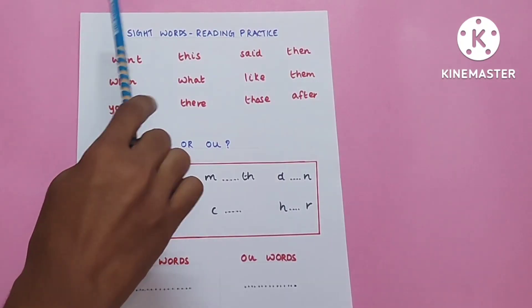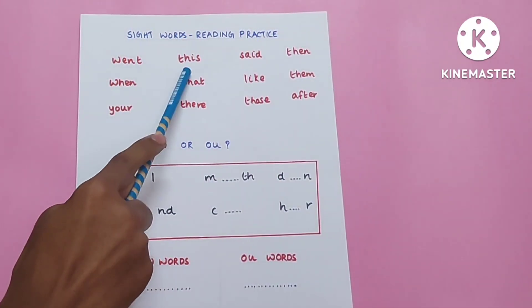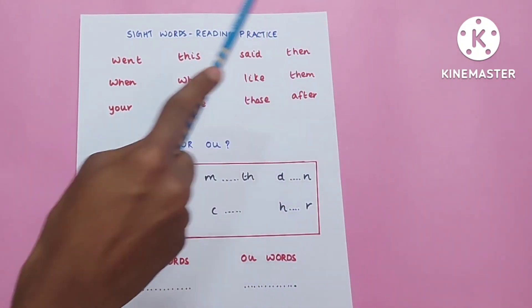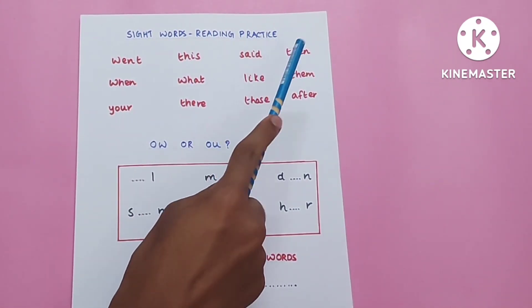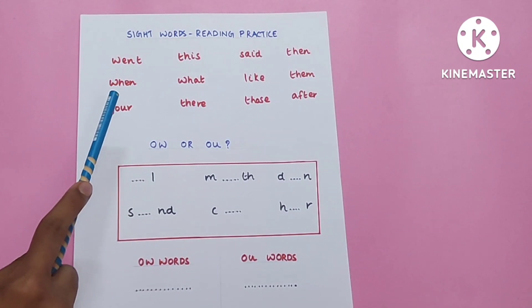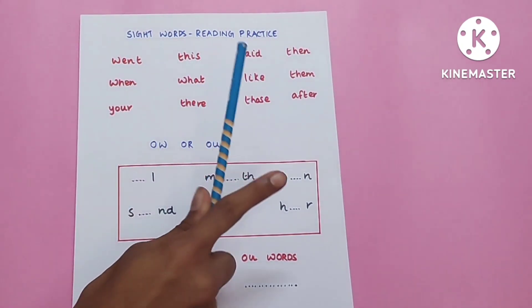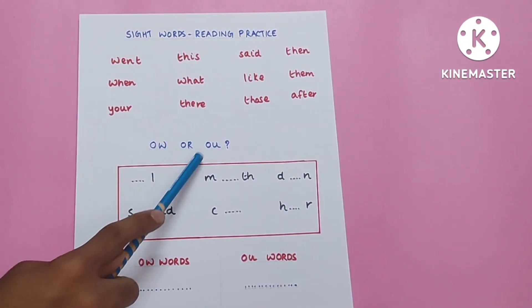Sight words reading practice: went, this, said, then, when, what, life, then, your, there, those, after.